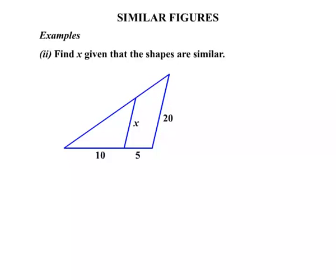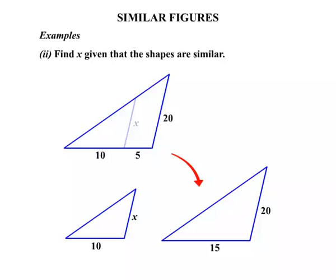Our second example, we need to find x given that the shapes are similar. Well, this time the triangles are overlapping. We can see the smaller triangle there. Let's write that out separately. Overlapping on top of the larger triangle. Again, let's write that out separately. Noting that, how did we get 15? Well, we got it from 10 and 5. Adding those lengths.